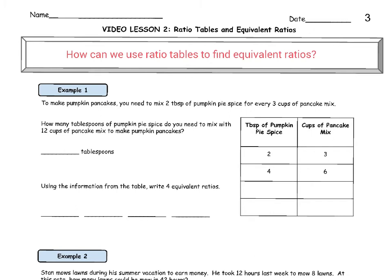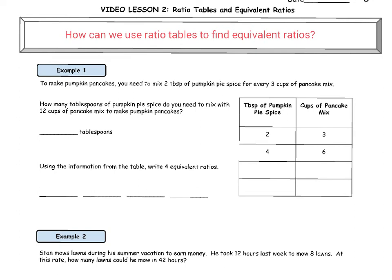Let's get right into it. Example number one: to make pumpkin pancakes, you need to mix two tablespoons of pumpkin pie spice for every three cups of pancake mix. How many tablespoons of pumpkin pie spice do you need to mix with 12 cups of pancake mix to make pumpkin pancakes? We see that the ratio of tablespoons of pumpkin pie spice to pancake mix is two to three. We need to figure out how many tablespoons of pumpkin pie spice we need to mix with 12 cups of pancake mix.